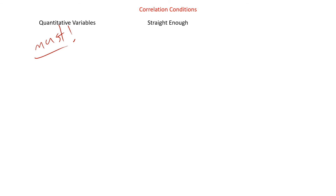Another condition: the relationship must be straight enough. A correlation describes a linear relationship. In order for it to have any meaning, it needs to describe a linear relationship. If we have a quadratic, the correlation will give us zero — so why use it? It doesn't have to be perfectly straight, but is it straight enough? And then no outliers — since correlation is computed using means and standard deviations, outliers can have a huge effect on your correlation coefficient in either direction.